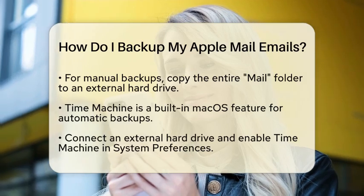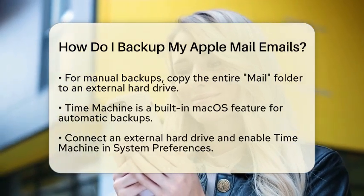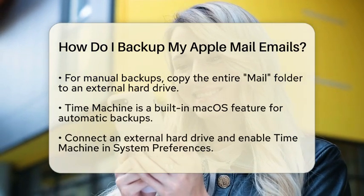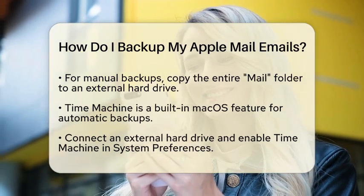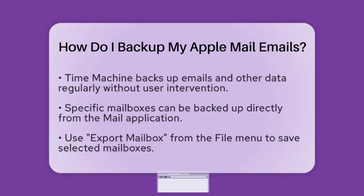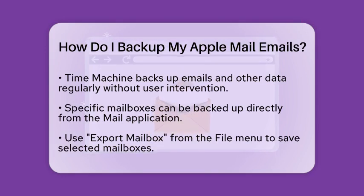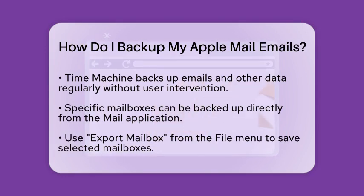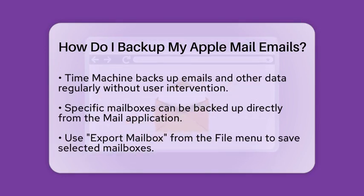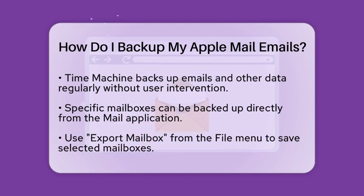Then, go to System Preferences and select Time Machine. If it is not already turned on, enable Time Machine and choose your external hard drive as the backup disk. From that point on, Time Machine will regularly backup your emails and other data without you needing to do anything.